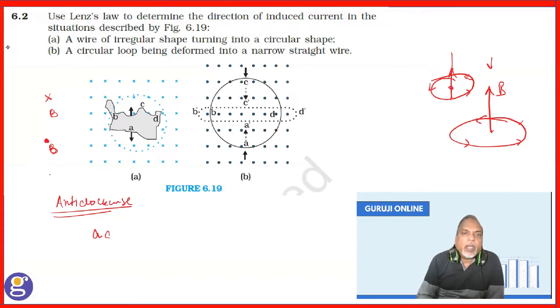so it means A, D, C, D. This way the current will move anti-clockwise.